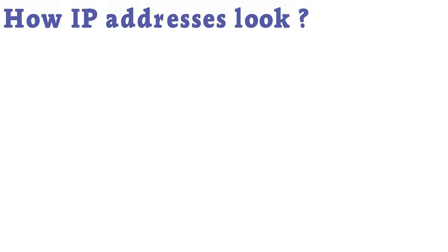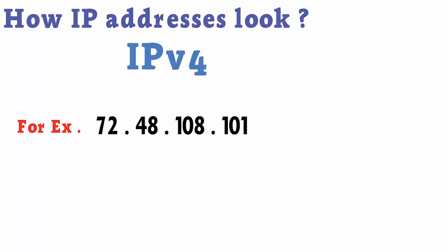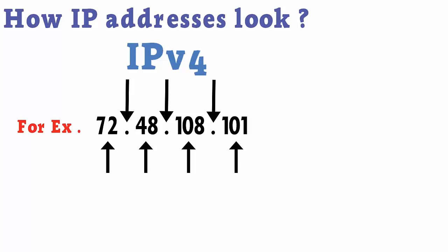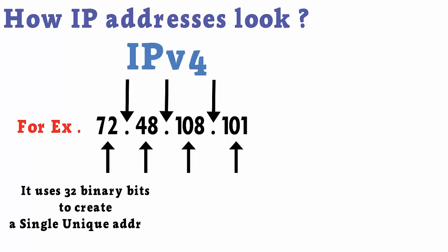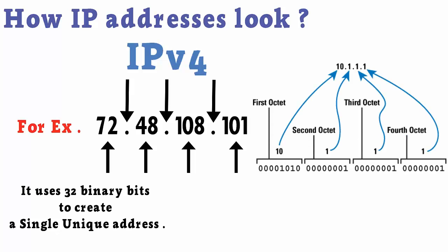IP Addresses have two common formats. IPv4, for example 72.48.108.101. IPv4 addresses are expressed by four numbers separated by dots. IPv4 uses 32 binary bits to create a single unique address on the network. Each number is the decimal representation for an eight-digit binary number, also called an octet.